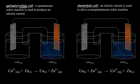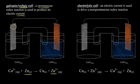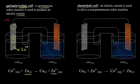A voltaic cell uses a spontaneous redox reaction to produce an electric current. Starting at our zinc electrode, solid zinc turns into zinc two plus ions — an atom of zinc loses two electrons to turn into Zn²⁺. Loss of electrons is oxidation, and oxidation is occurring at our zinc electrode, so the zinc electrode must be our anode. Remember: oxidation occurs at the anode — you can remember that by 'anox.'